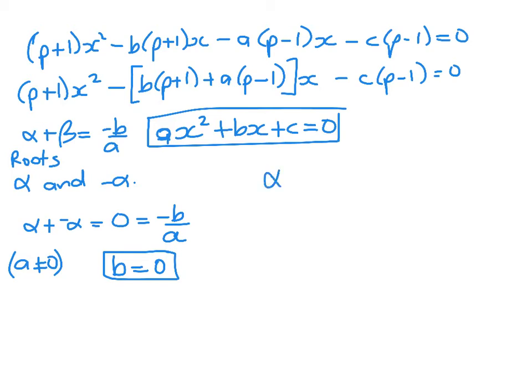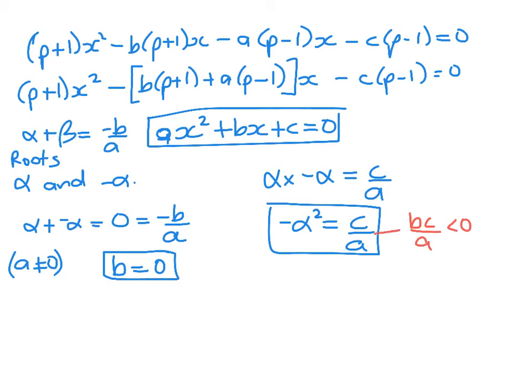We also know that the product of the roots, alpha times negative alpha, is equal to c over a. So we're going to get negative alpha squared is equal to c over a. Remember where I'm heading is that I want to show that bc over a is negative. So this is already looking a bit like this, but we're not anywhere near there yet.